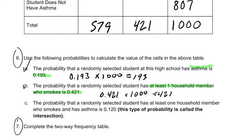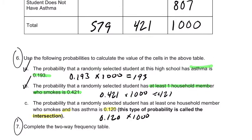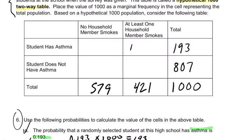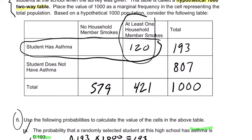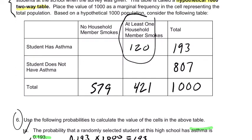Let's talk about part C. It says the probability that a randomly selected student has at least one household member who smokes AND has asthma — that 'and' is an intersection. That probability is 0.12, so it's going to be 120. Multiply by 1,000, that's 120. That 120 has to go at the joint intersection of asthma and at least one household smoker — it's literally at an intersection, which is what we call the 'and' statement.